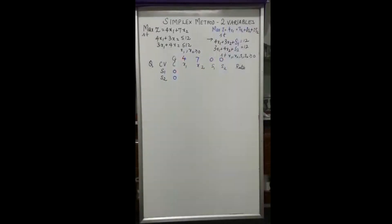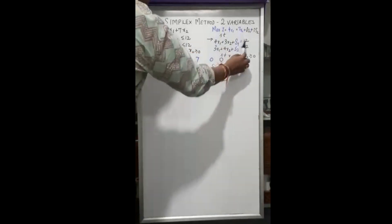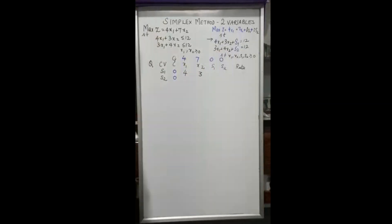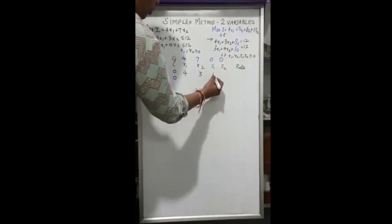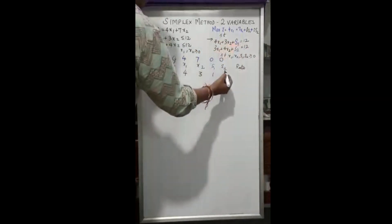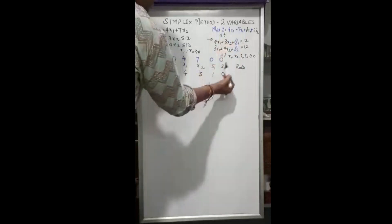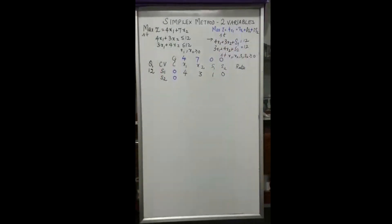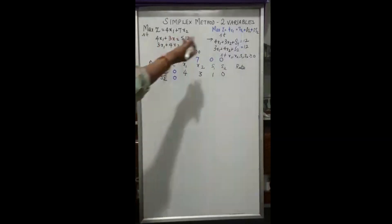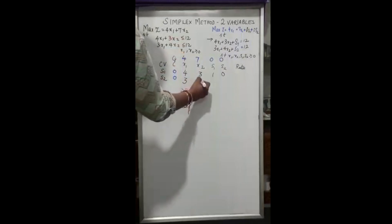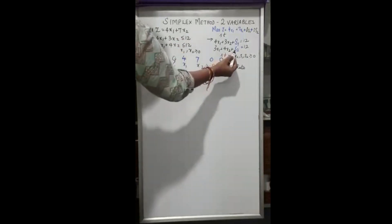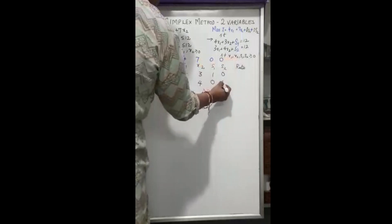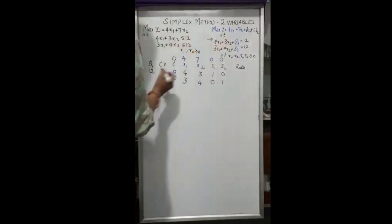We fill in the constraint coefficients. The first constraint has coefficients 4 and 3 for x1 and x2 respectively; s1 has coefficient 1 and s2 has coefficient 0, with constant 12. The second constraint has coefficients 3 and 4 for x1 and x2; s1 has coefficient 0 and s2 has coefficient 1, with constant 12.